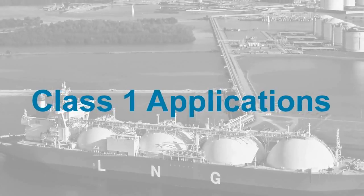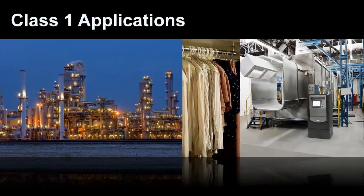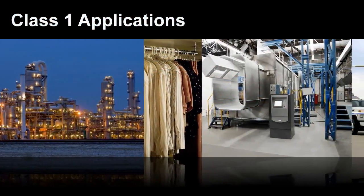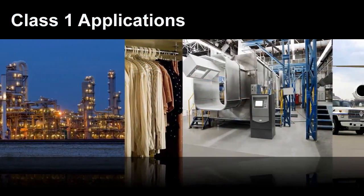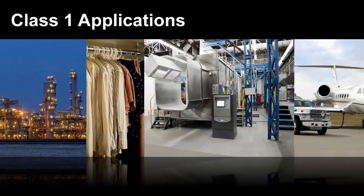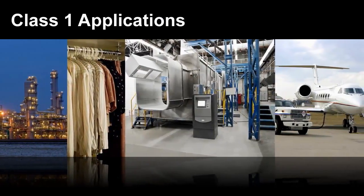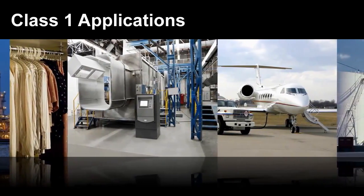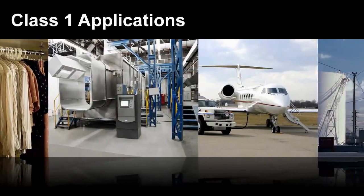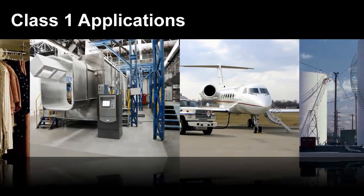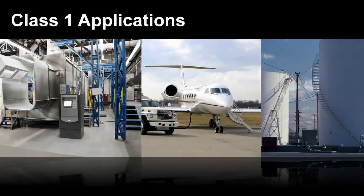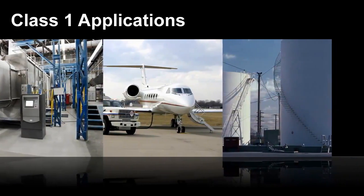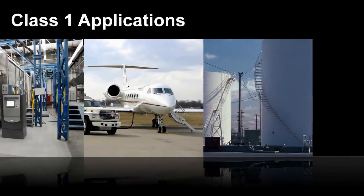Some typical Class 1 locations are petroleum refineries and gasoline storage and dispensing areas, dry cleaning plants where vapors from cleaning fluids can be present, aircraft hangars, utility gas plants, and operations involving storage and handling of liquefied petroleum or natural gas.